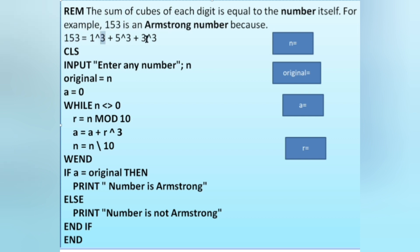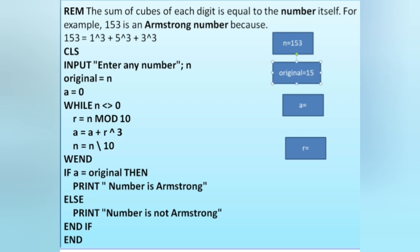The program takes one number as input. We use CLS to clear the output screen, then INPUT to take any number from the user — I'll enter 153 for now. We store the entered value in a variable called 'original', and initialize a variable 'a' to zero.